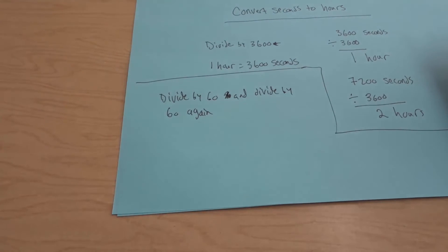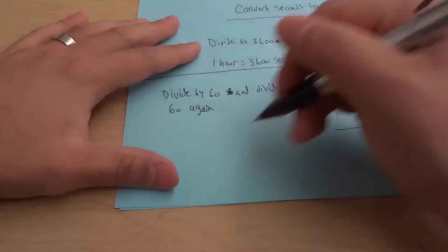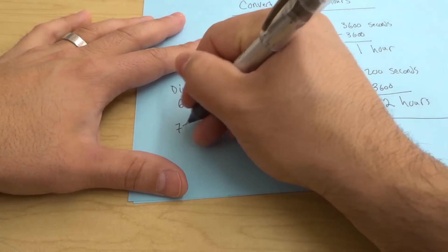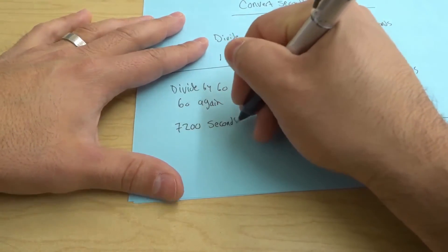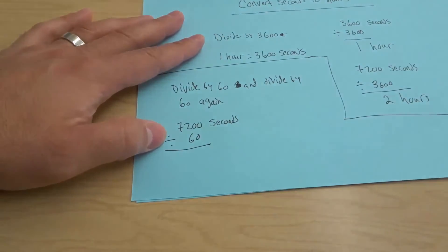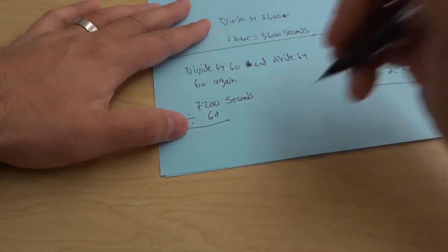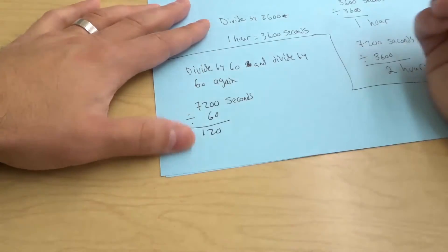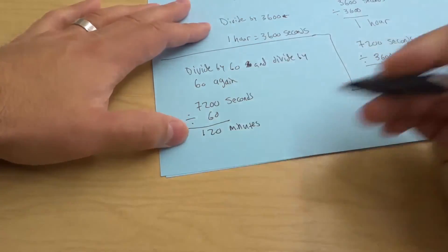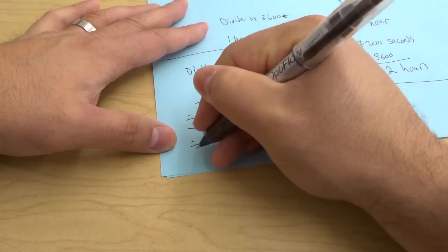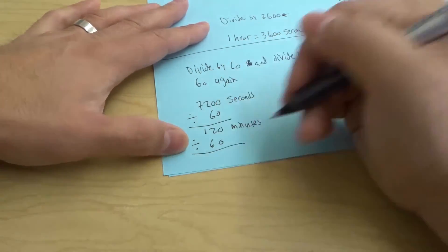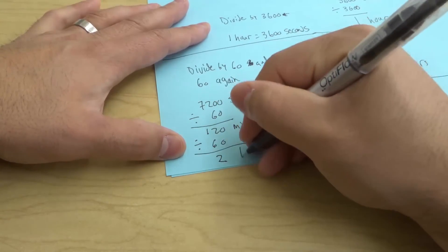So just for the sake of argument, let's just go ahead and use the same example, 7,200. So we have 7,200 seconds, and we're going to divide this number by 60. 7,200 divided by 60 is going to give us 120, and that is the number of minutes. And then we're going to take this and divide this by 60, which is going to give us 120 divided by 60 gives us 2, which is the number of hours.